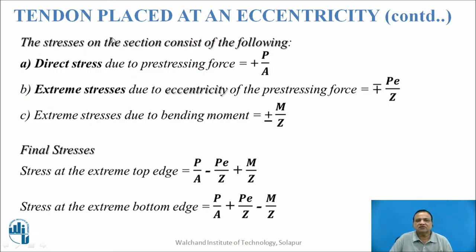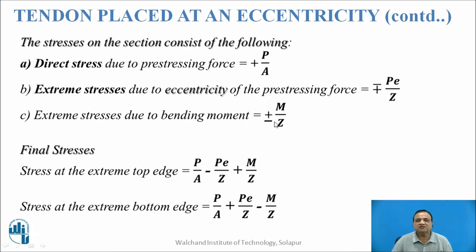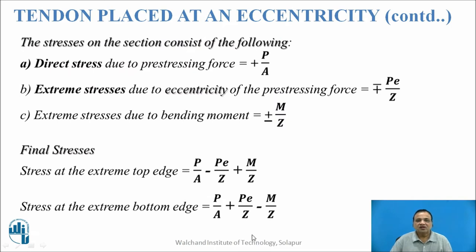The stress on the section consists of the following. Direct stress: when we transfer this eccentric load to the center, we get a direct stress P divided by cross-sectional area. Extreme stresses due to the eccentricity of the pre-stressing force are minus or plus P·E/Z — negative at top and positive at bottom, as it induces bending compression at bottom and bending tension at top. Extreme stresses due to the bending moment are plus or minus M/Z, giving bending compression at top and bending tension at bottom. Final stress: P/A minus P·E/Z plus M/Z at top, and P/A plus P·E/Z minus M/Z at bottom.